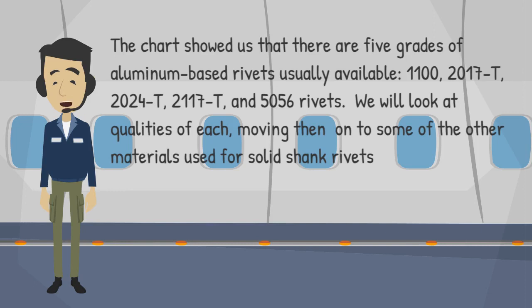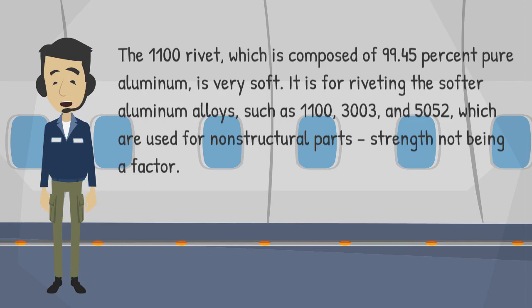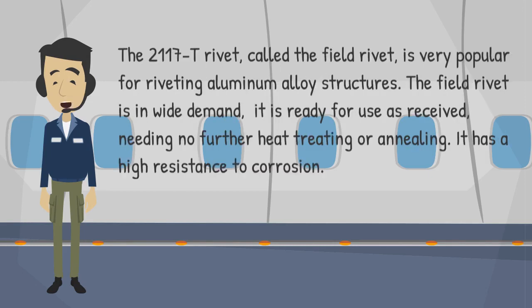The 1100 rivet, composed of 99.45% pure aluminum, is very soft. It is used for riveting softer aluminum alloys such as 1100, 3003, and 5052, which are used for non-structural parts where strength is not a factor. The 2117-T rivet, called the field rivet, is very popular for riveting aluminum alloy structures. It is ready for use as received, needing no further heat treating or annealing, and has a high resistance to corrosion.